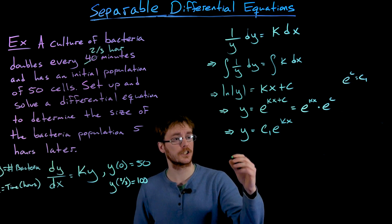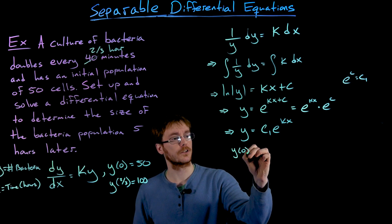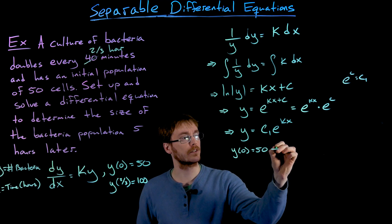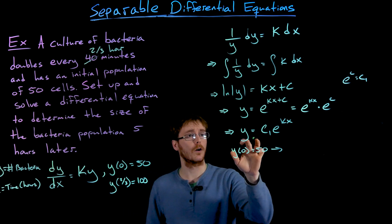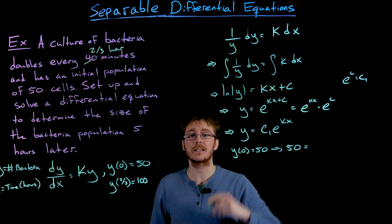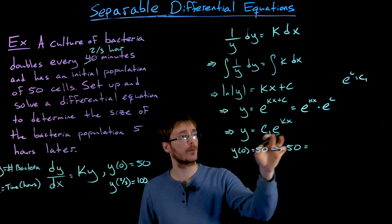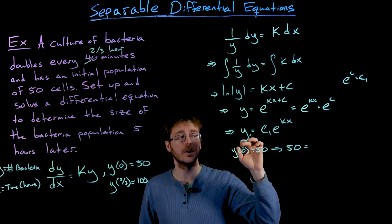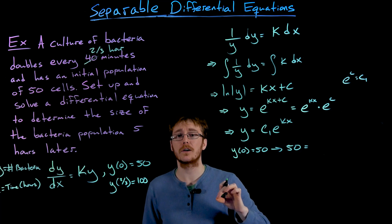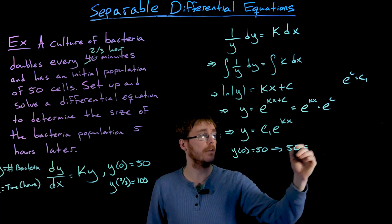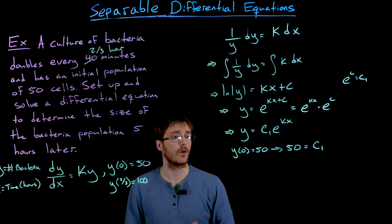So if we use that first initial condition, y of 0 equals 50, what does that tell us about our model? Well, we know that y is going to be equal to 50, so we can set the left-hand side equal to 50. And then on the right-hand side, we set x equal to 0, but that'll give us e to the power of 0, which is equal to 1. So that just simplifies very nicely to c1. So now we know our solution actually looks like 50 times e to the power of kx.